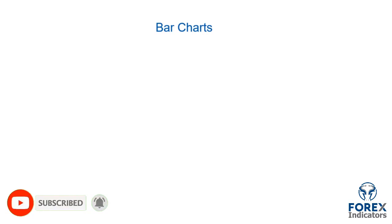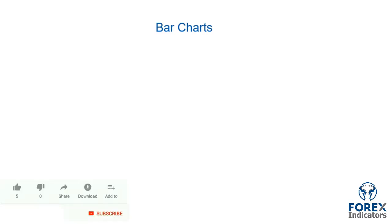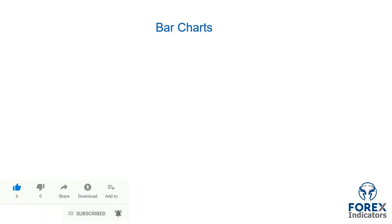There are three main types of charts that traders use: bar charts, candlestick charts, and line charts. Most people are familiar with line charts and bar charts, as these are taught at universities or in other educational programs. But the candlestick chart isn't often taught, and this is actually the most popular type of chart for technical analysts.